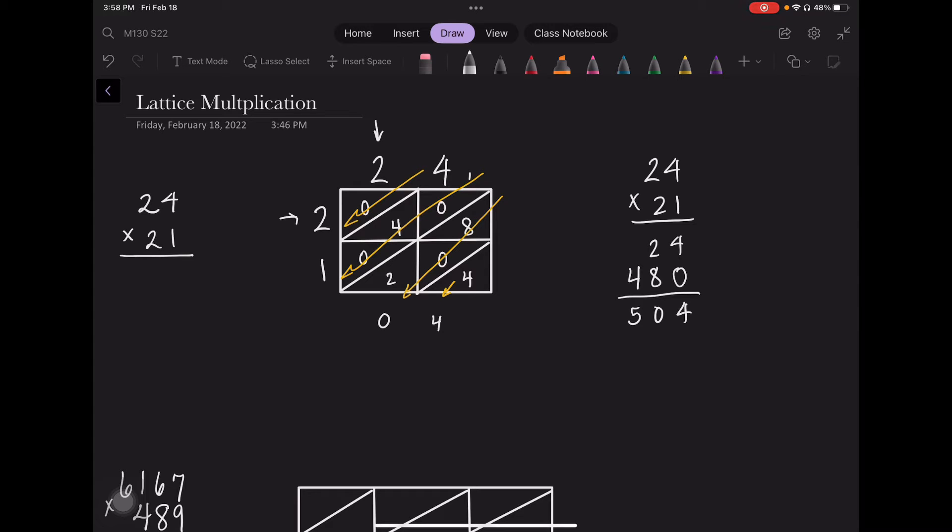0, 4, 0, 1 is 5, and then I have a 0 here which is the number 504, which is what we had over here.